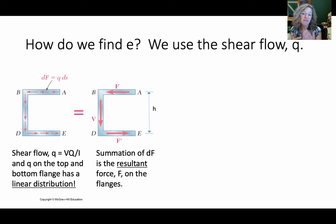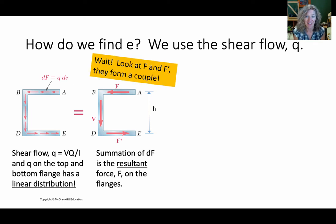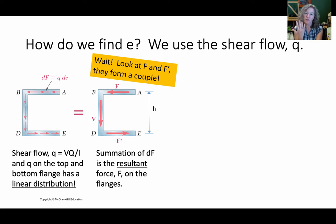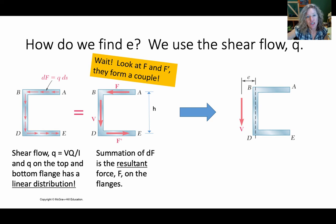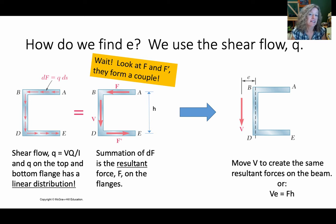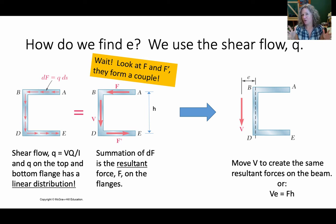We can sum those up and find the forces F and F prime. Those are just a summation of forces. That V we put there is equal to the applied shear, because the shear flow in the web does have to sum up to equal the total shear that's applied. Those two forces at the top and bottom flange are equal and opposite and they form a couple that causes rotation. We also have internal equal and opposite forces on the other side causing the rotation of concern. If we take that V and push it out so that it's acting at a distance to counteract the couple, we can find the E value as: V times E must equal the force couple, or force times H. That's the big picture of how shear center works.